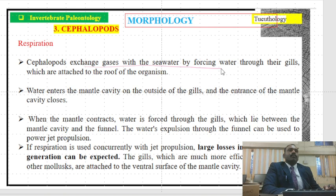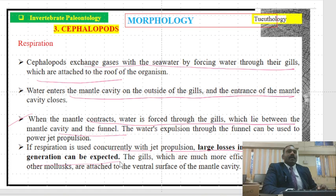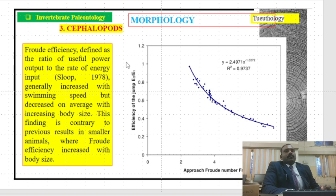Coming to respiration: cephalopods exchange gases with sea water by forcing water through their gills, which are attached to the roof of the organism. Water enters the mantle cavity on the outside of the gills; the entrance of the mantle cavity closes when the mantle contracts, and water is forced through the gills lying between the mantle cavity and the funnel. In jet propulsion, large losses in speed and oxygen are expected, consuming much more energy compared to simple swimming.